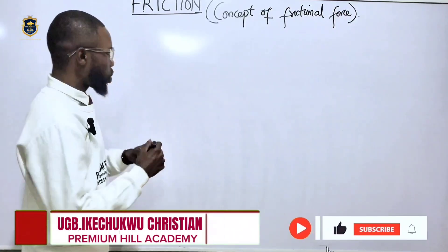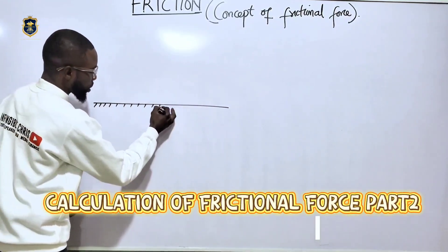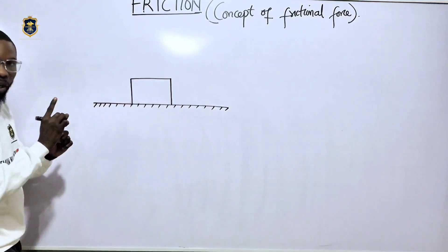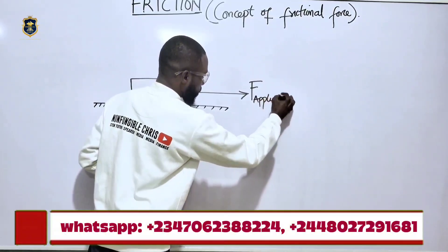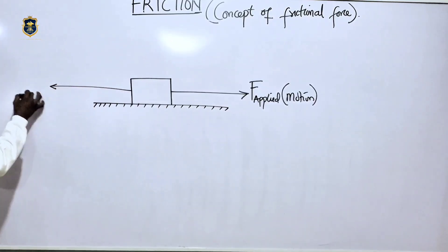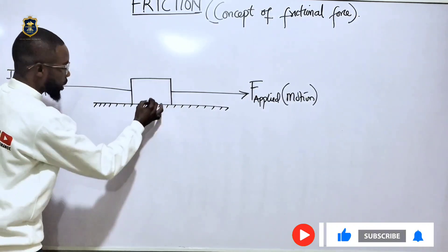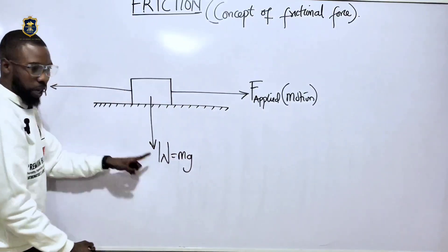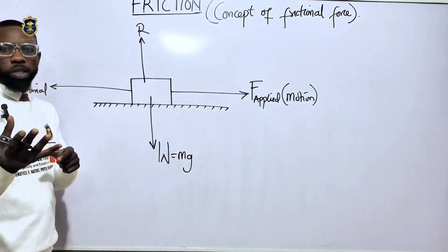Let's look at another concept. There are cases where we have a body on a rough horizontal surface. If this is our direction of motion, let's call this the applied force. The frictional force opposes the direction of motion. The forces acting on this body are the weight, which is equal to mg, and the normal reaction.